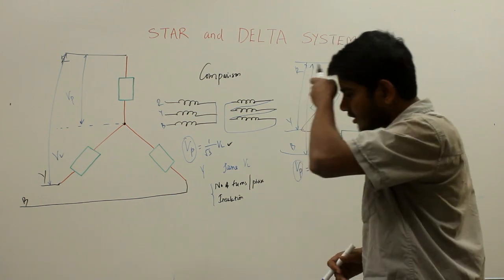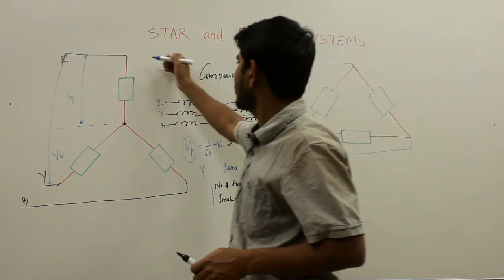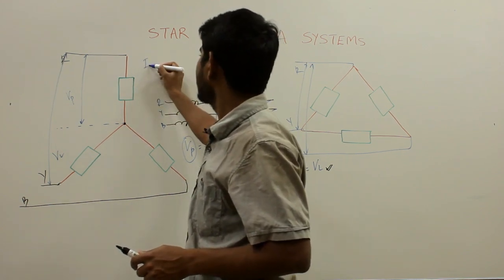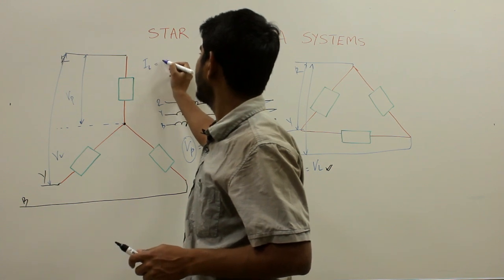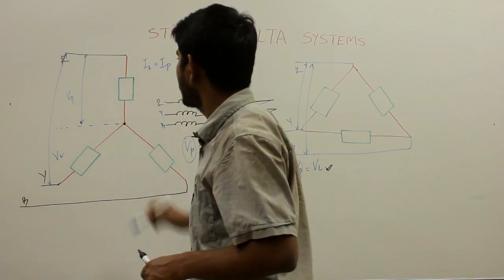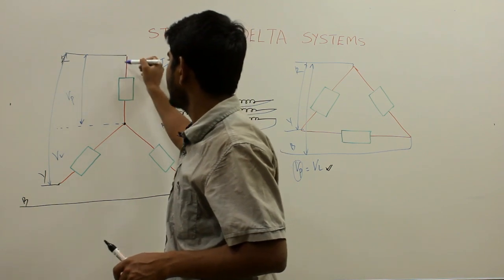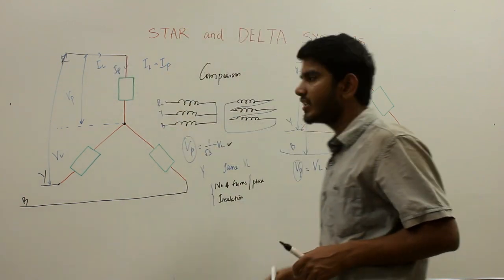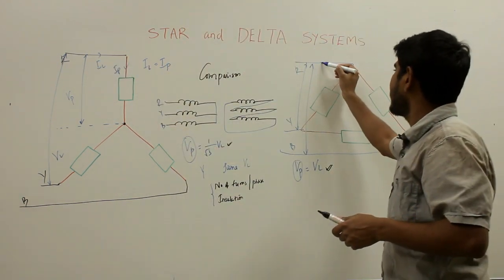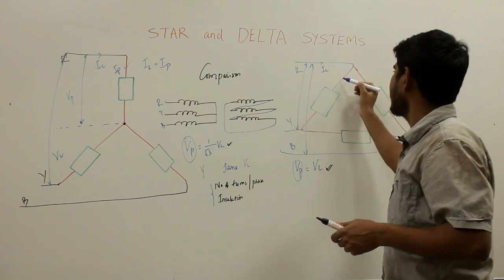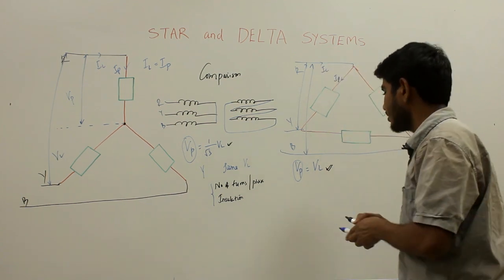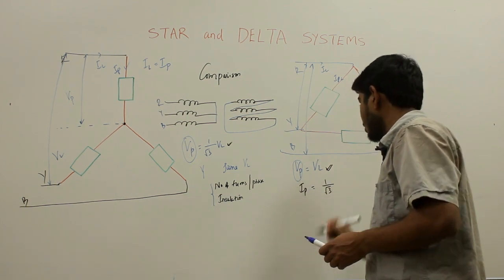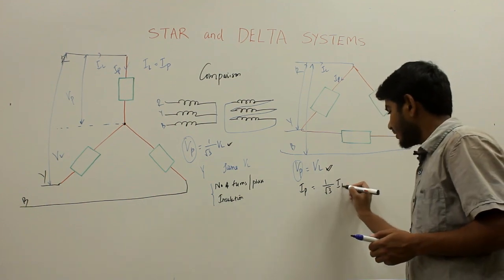If we talk about currents, in the star connected system the line current is equal to the phase current. In the delta connected system, however, the line current and phase current are different. The phase current in delta equals 1 by root 3 times the line current IL.